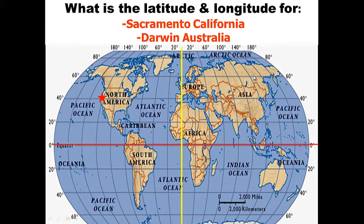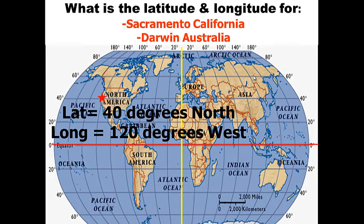When you're done, check your answer here. Sacramento is north of the equator and west of the prime meridian — so 40 degrees north of the equator and 120 degrees west of the prime meridian.